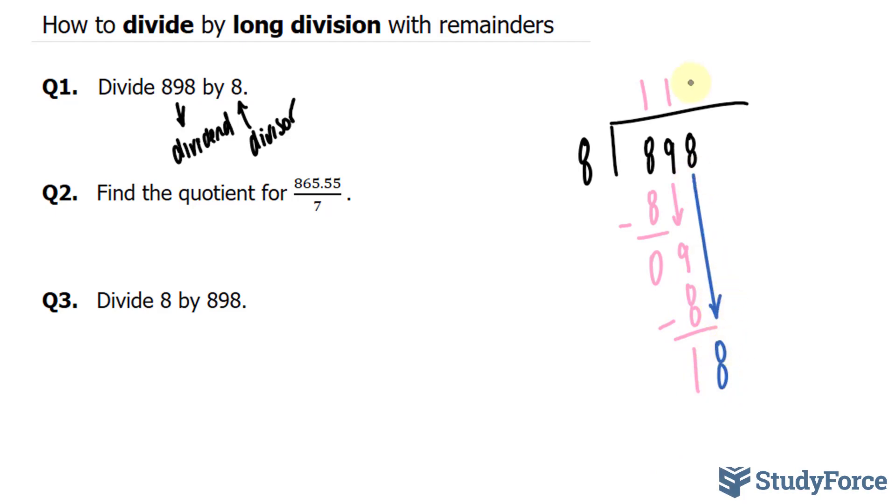8 fits into 18 twice. Because 2 times 8 is equal to 16. Subtracting these, we end up with a remainder of 2. Now depending on the level of study, you might stop right there and say that the remainder is 2. But if you want to find out what the exact quotient is, because right now the quotient isn't exact, what you do is you introduce a decimal.